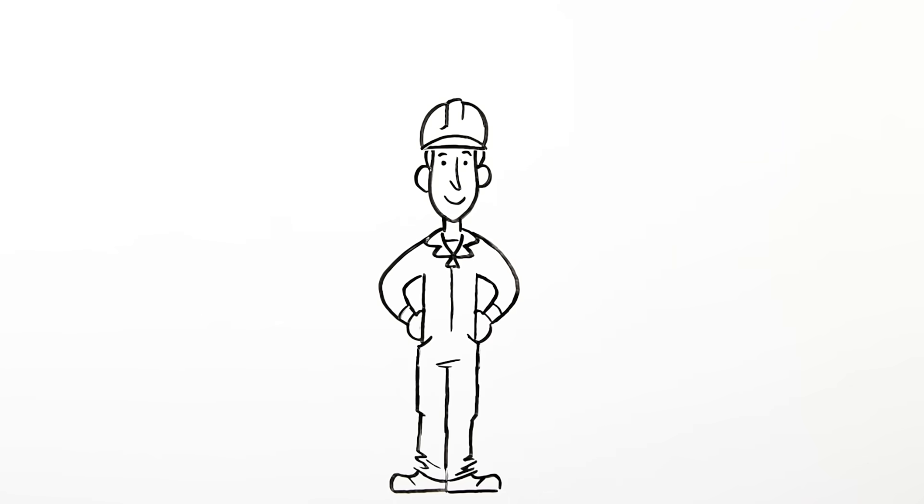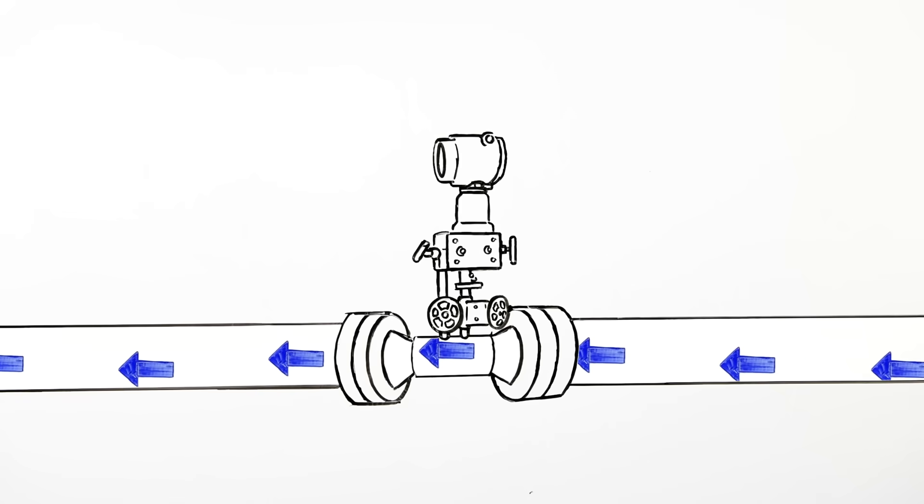The 9295 accurately measures up to 10 times greater flow range than traditional DP meters. This provides precision when flow rates vary.